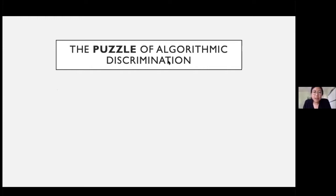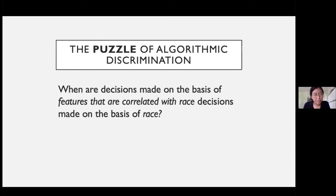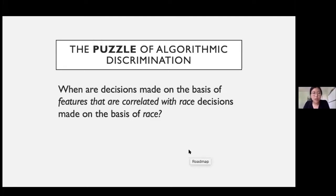Database predictive tools like those at the center of the HUD versus Facebook case clarify an underappreciated problem for discrimination theory, which I'll call the puzzle of algorithmic discrimination. The question is simply this: when are decisions made on the basis of features that are correlated with race, decisions made on the basis of race? This question is not just relevant to current debates about algorithms — a version of it has dogged philosophers and legal scholars for decades under the descriptor 'proxy discrimination,' in which an attribute that is a proxy for race or sex is used in decision making.